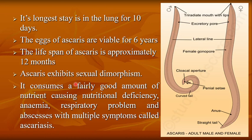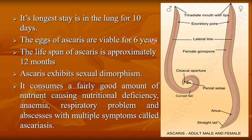Its longest stay is in the lungs for 10 days. The eggs of Ascaris are viable for up to 6 years under unfavorable conditions — this is called the diapause condition. When favorable conditions return, the eggs hatch and adult worms emerge. The lifespan of Ascaris is approximately 12 months.